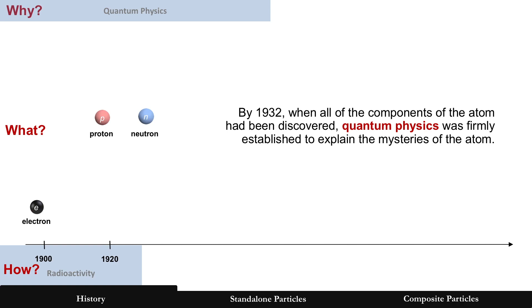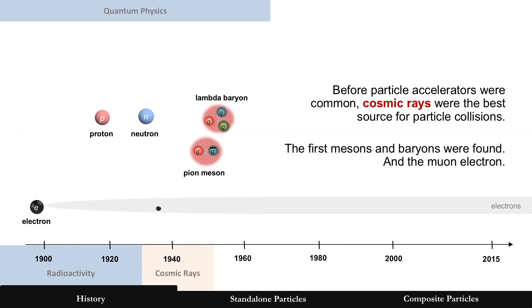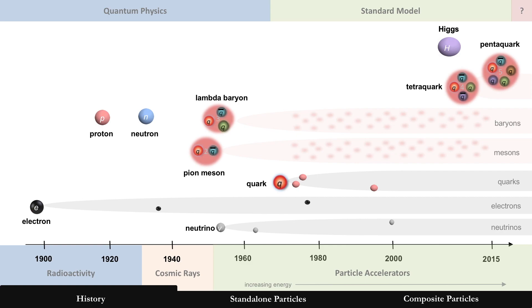By 1932, when the neutron was discovered, quantum physics was pretty firmly established. Moving forward to cosmic rays — beyond radioactivity — which allowed discovery of more particles before particle accelerators existed. Think of cosmic rays as a natural particle collider high in the upper atmosphere. The positron was discovered, then the pion and lambda. This was the start of mesons and baryons.